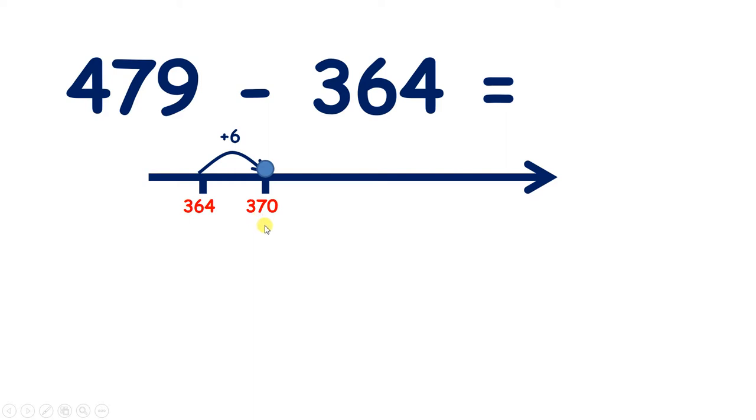Now we can target the 100. So what do we need to add to 370 to make 400? We can add 30 to make 400, and we want to reach 479. So we can add 70 to get to 470, and then another 9 takes us to 479.